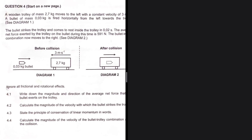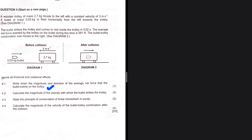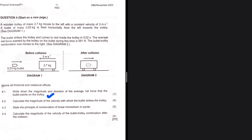Question 4.1: we are told that we can ignore all frictional and rotational effects. We need to write down the magnitude and direction of the average net force that the bullet exerts on the trolley. We are given the force the trolley exerts on the bullet, so by Newton's third law they have the same magnitude but opposite directions. The magnitude is 591 N.